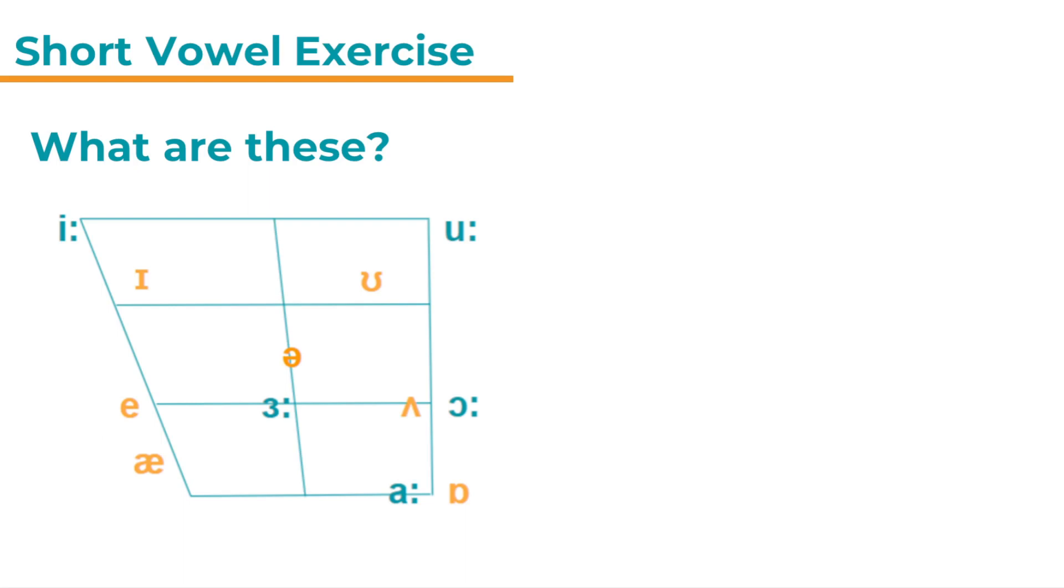What are these? Have a look at this vowel chart. If this looks new to you, make sure to check out my video on the vowel chart where I explain this chart. On the chart you can see all the vowel sounds of British English. Some of them are orange and some of them are green.